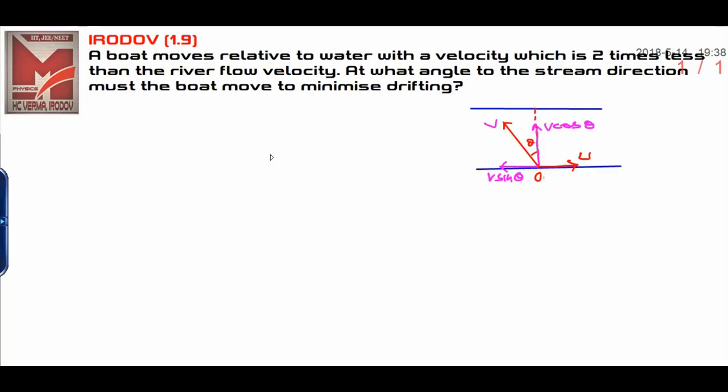Dear student, this is question number 1.9 from IE Erodo physics. In this question, a boat moves relative to water with a velocity which is two times less than the river flow velocity. At what angle to the stream direction must the boat move to minimize drifting?